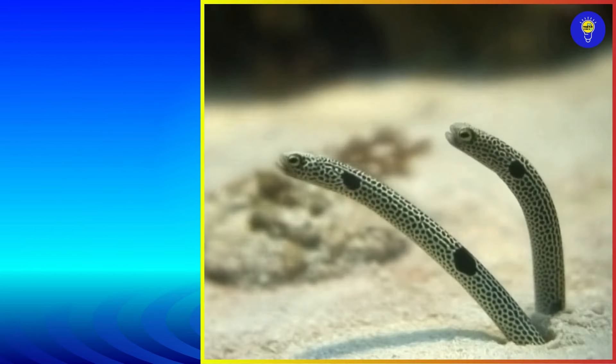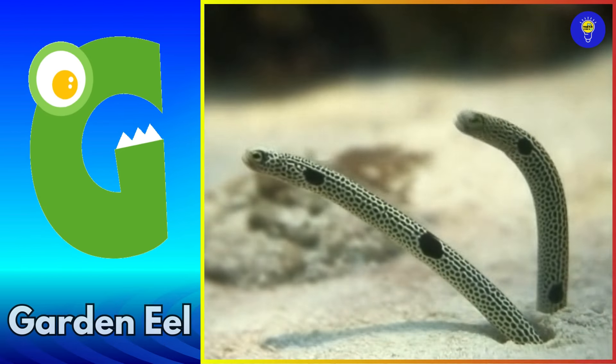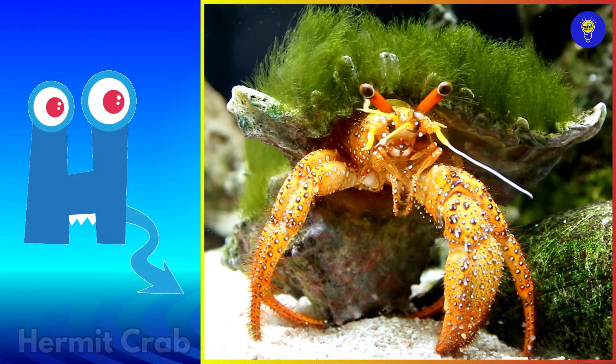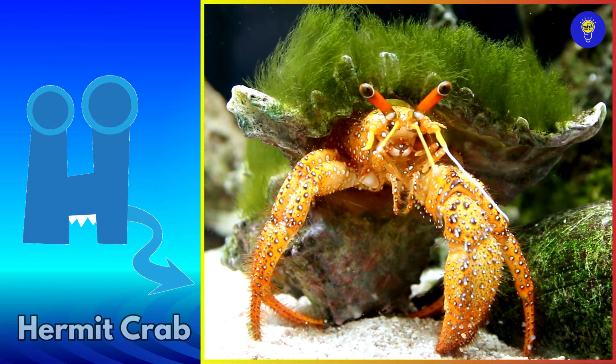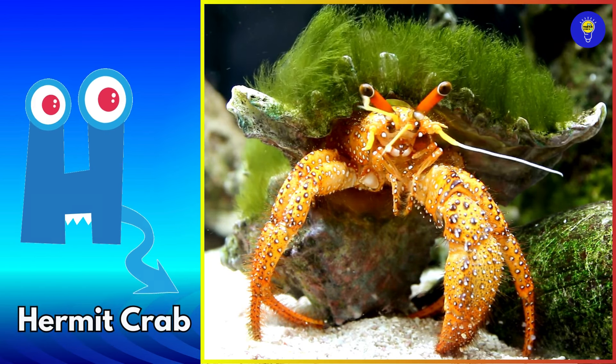G is for garden eel. Guh, garden eel. H is for hermit crab. Ha, hermit crab.